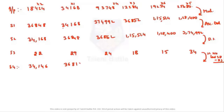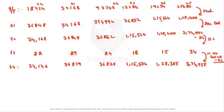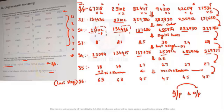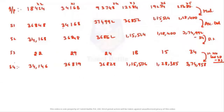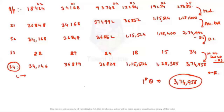So: 168 minus 22 gives 34,146. Similarly 848 minus 29 gives 36,819. Next is 36,828. Then 1,15,506. Then 1,28,385. Then 3,74,958. The question asks for the first number from the right in step four, which is 3,74,958. That is the answer for the first question.